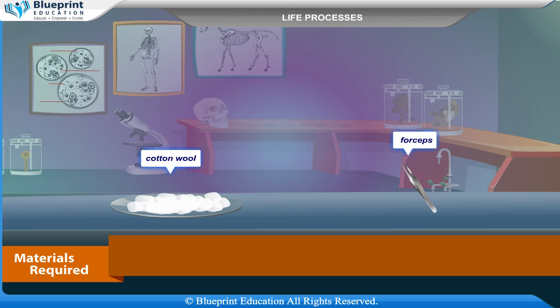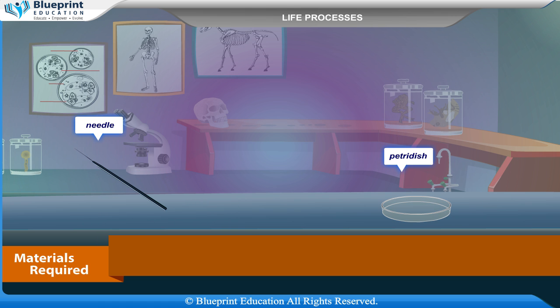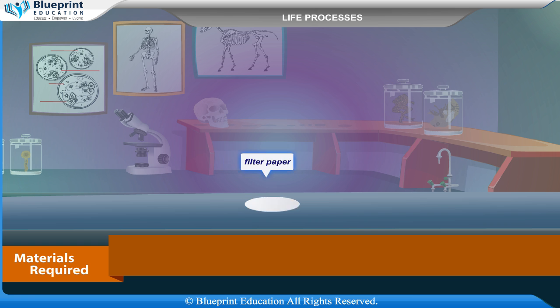Additional materials required include cotton wool, forceps, a needle, a petri dish, and filter paper.